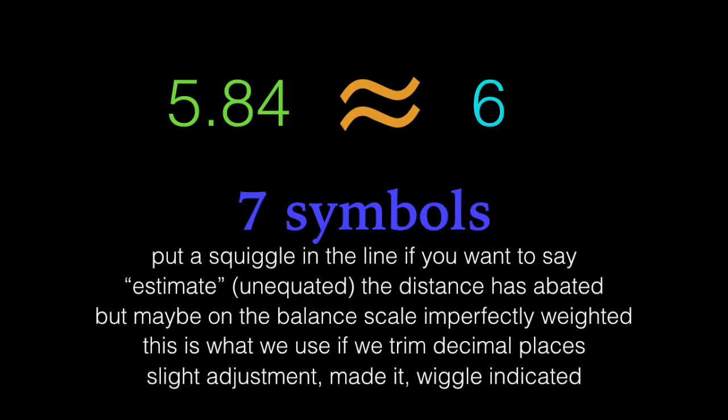Put a squiggle in the line if you want to say estimate, unequated, the distance has abated, but maybe on a balance scale, imperfectly weighted. This is what we use if we trim decimal places. Slight adjustment, made it, wiggle indicated.